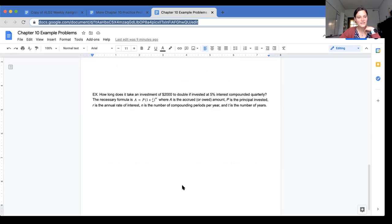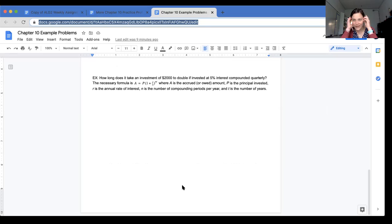And then next up, we have an investment application. So this one's a little bit trickier. How long does it take an investment of $2,000 to double if it is invested at 5% interest compounded quarterly? We have our necessary formula, and I have a little explanation of what each variable is. On the test, I will give you the formula, but I'm not going to tell you which one is for compound interest and which one is for compounding continuously.